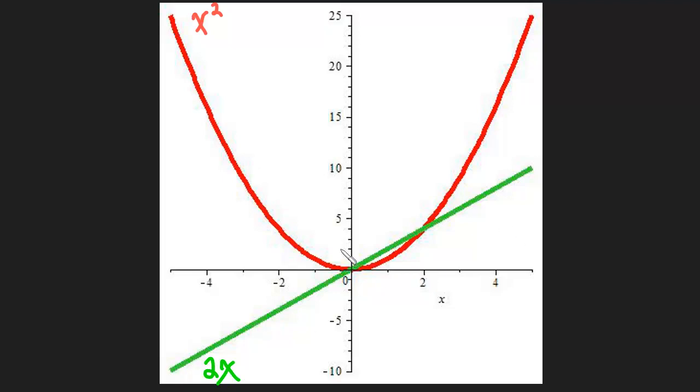The derivative will tell you the slope of the tangent line to any point on the original function. So for instance, let's say we want to know the slope of the tangent line when x is 3. So x is 3. There's the tangent line to the original function. So this is the tangent line to x squared.